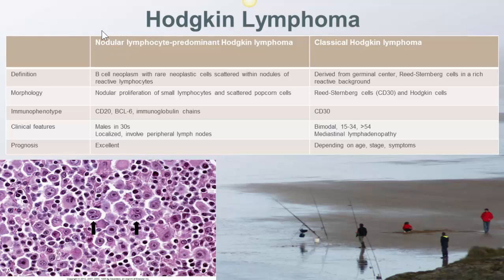Hodgkin lymphoma can be classified into two groups: nodular lymphocyte-predominant Hodgkin lymphoma and classical Hodgkin lymphoma. Nodular lymphocyte-predominant Hodgkin lymphoma is a B-cell neoplasm with rare neoplastic cells scattered within nodules of reactive lymphocytes. It is characterized by nodular proliferation of small lymphocytes and scattered popcorn cells — large lymphoid cells with abundant cytoplasm and vesicular multilobulated nuclei. The cells express CD20, BCL6, and immunoglobulin chains.